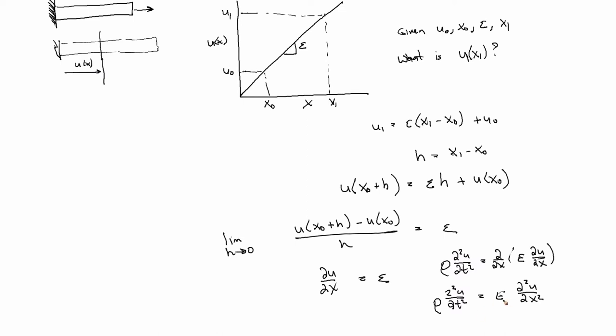And a lot of times you'll see this, if you define a variable c, that's the square root of e over rho. So then the final form of this equation might be that guy.